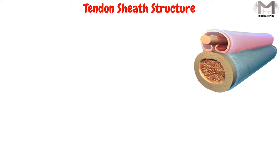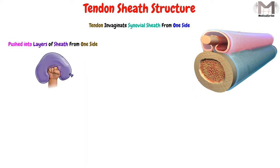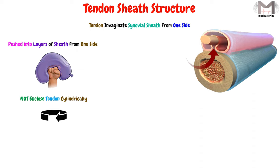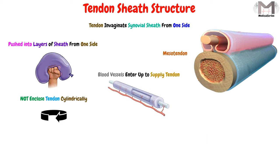To understand the structure of the tendon sheath clearly, we need to know that the tendon usually invaginates the synovial sheath from one side only — as if the tendon was pushed into the layers of the sheath from one side. So the sheath does not enclose the tendon cylindrically. The space created here, which is like a small fold, groove, or invagination, is called the mesotendon, and from the mesotendon blood vessels enter to supply the tendon.